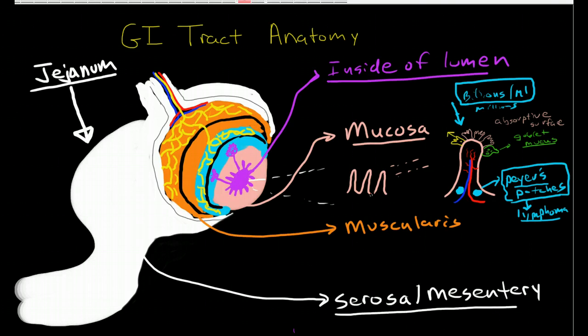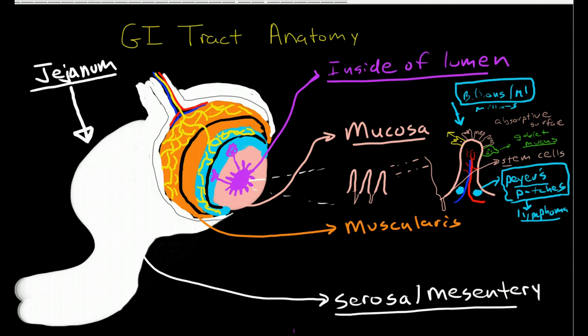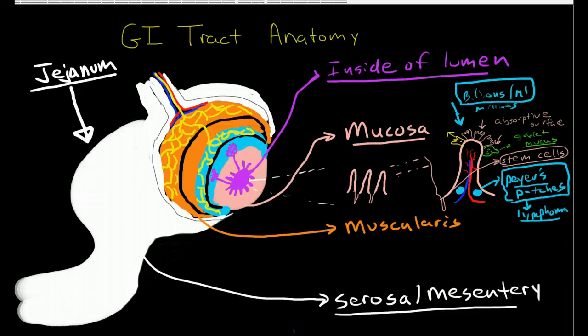Now in between these villi we actually have these very deep crypts called the crypts of Lieberkuhn, and these are important because they have stem cells, and they're sort of pluripotent stem cells that can become many types of cells, many types of enterocytes including goblet cells and absorptive enterocytes, and this yellow cell here which is an enteric endocrine cell that produces hormones. It also creates cells called Paneth cells, and I'm not going to talk about their function now. But there's basically four types of stem cells, there are four types of cells that these stem cells can create, and all of them come to line the villi of the small bowel.